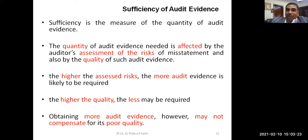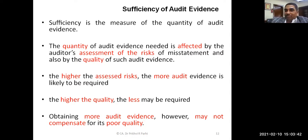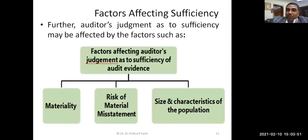Obtaining more audit evidences may not compensate for poor quality. If the quality of evidence is very poor, that does not mean you can compensate by collecting more evidences — it may not work. Ultimately, you have to draw reasonable conclusions, and evidence must be sufficient as well as appropriate. Both quantity and quality play an important role. Depending upon the facts and circumstances, the auditor has to make a judgment about how many evidences and what kind of evidences will be appropriate in the given instance.